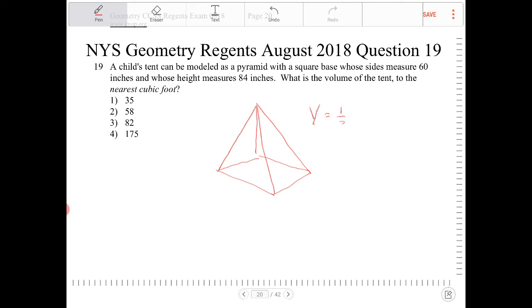V equals one-third times the area of the base times the altitude, which I'm going to call H. So in this case, we're dealing with a square base pyramid.